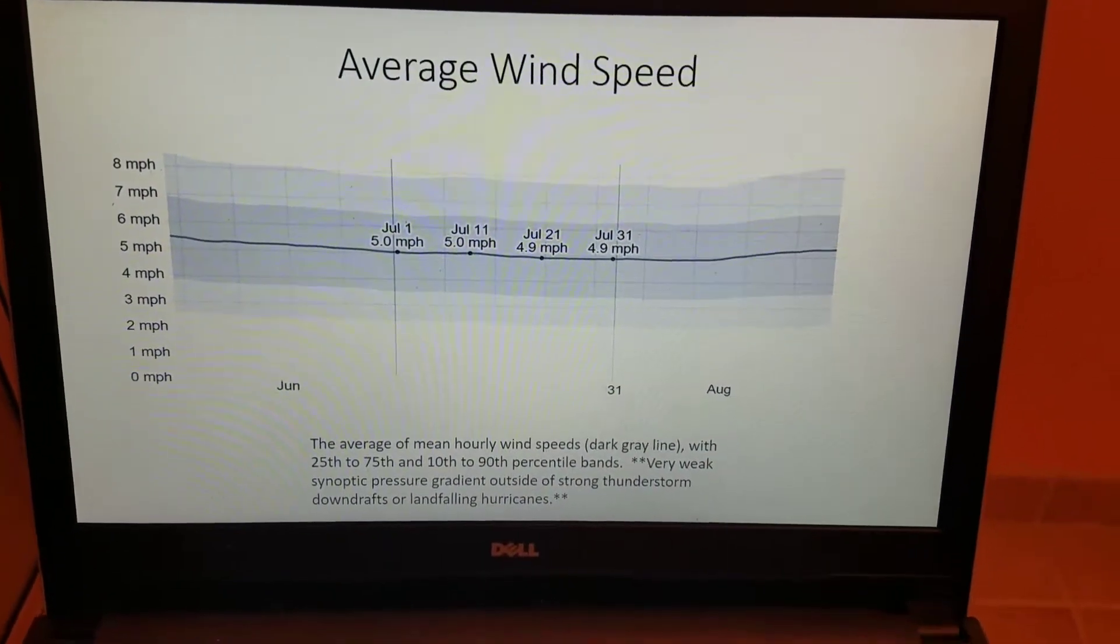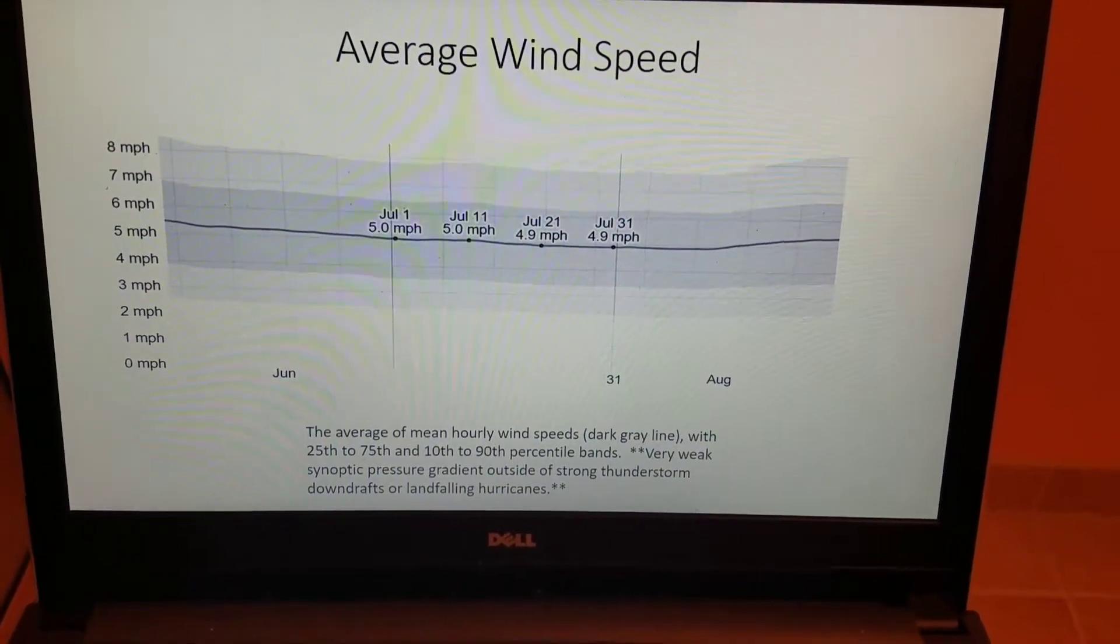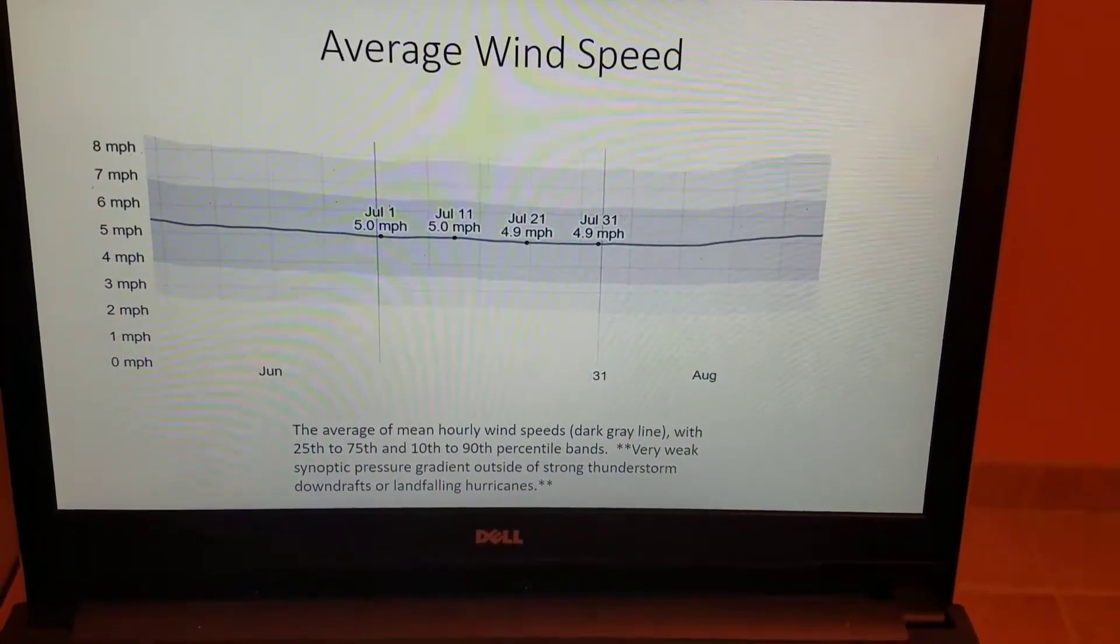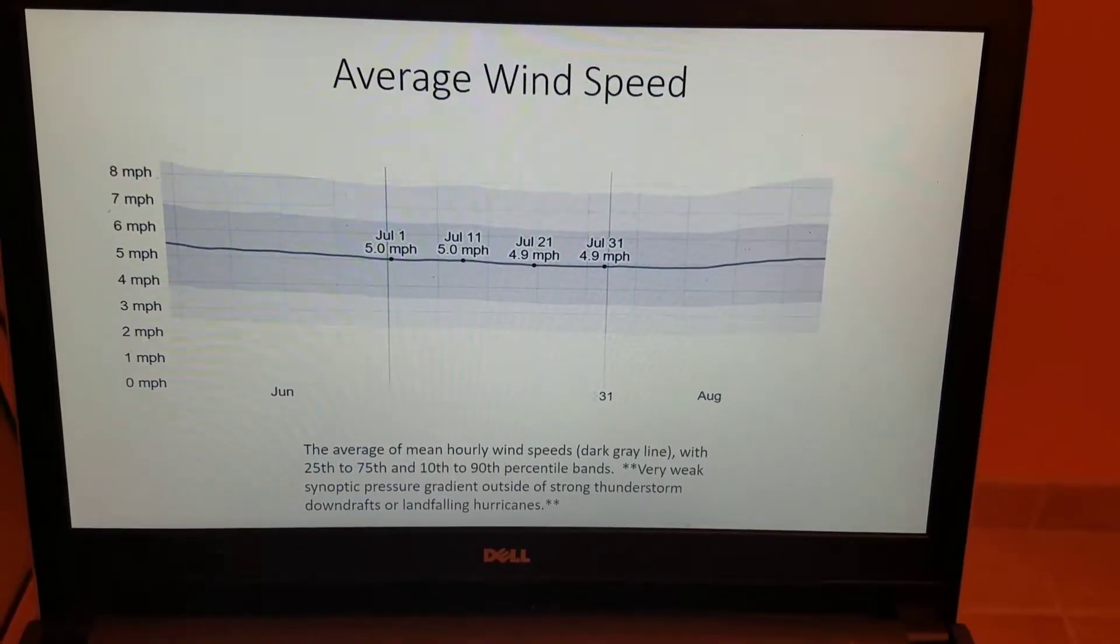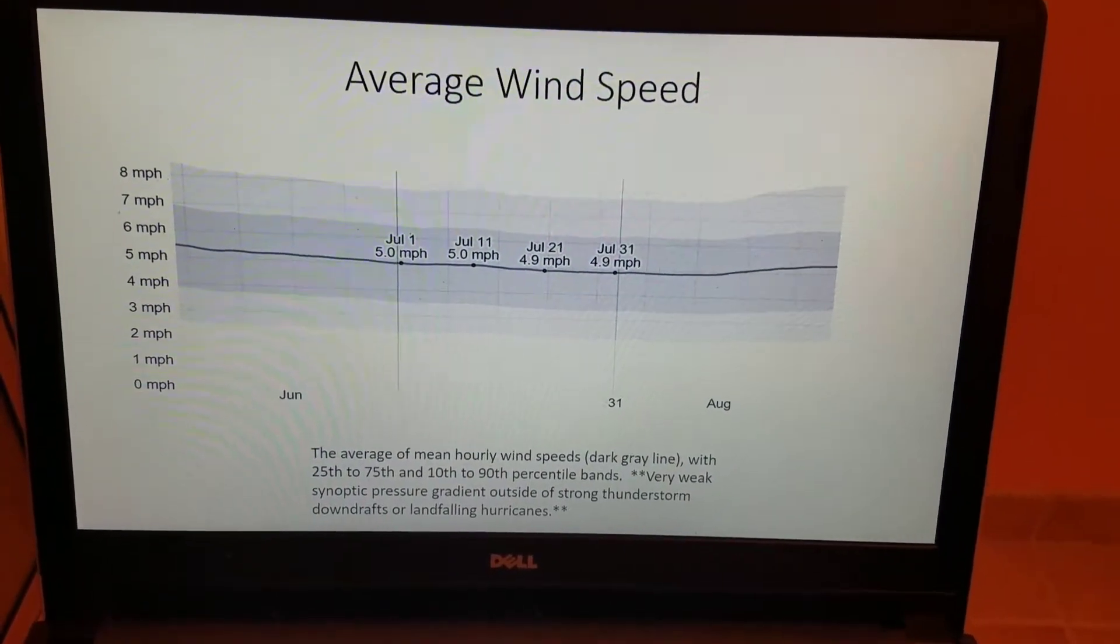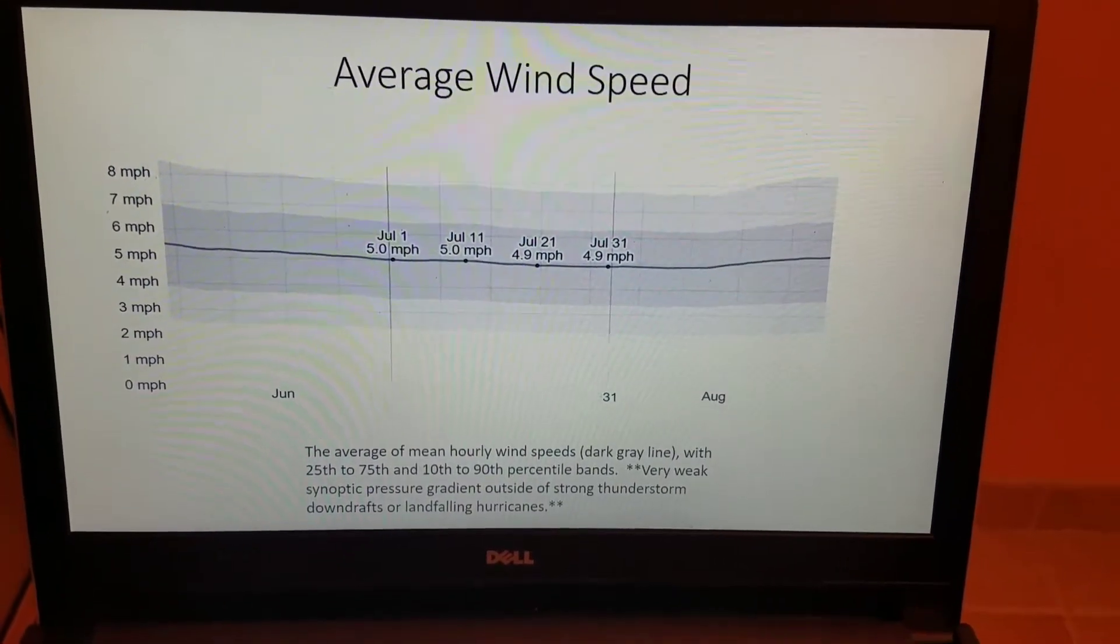Again, the pressure gradient is very weak. The polar front jet streams along the U.S.-Canadian border. We just don't have the same type of storm dynamics that we get in the winter time here in southeast Virginia.